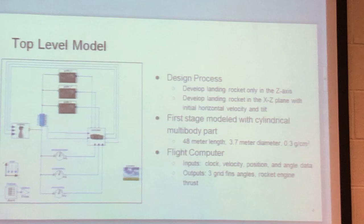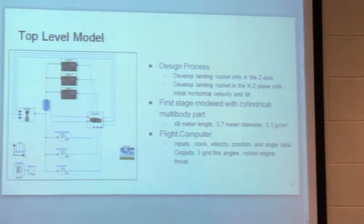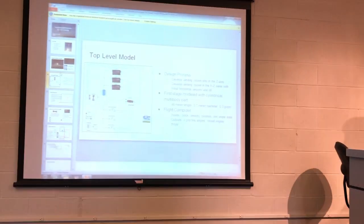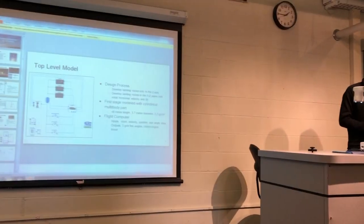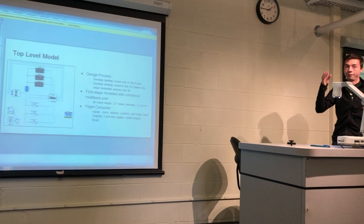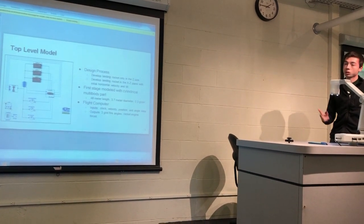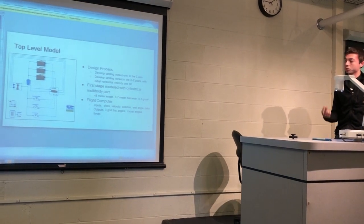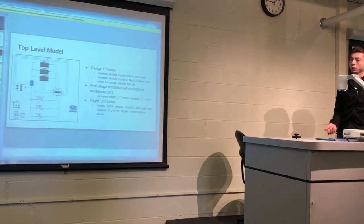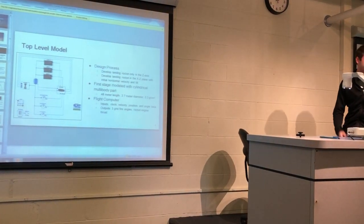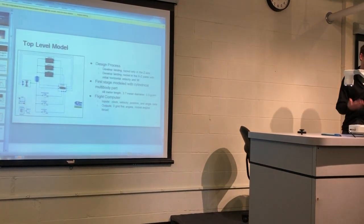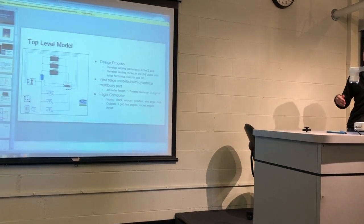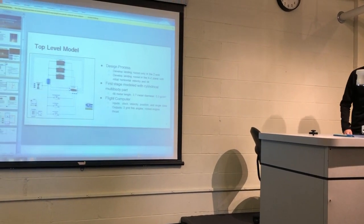This is basically my model from the top view. I have this multi-body part that's modeled as a cylinder, and it has the same length, diameter, and density as an actual Falcon 9 booster. I basically started off by having it only in the Z axis, so having it only basically falling down, and I only had to worry about burns in that axis. And then as I got that working I graduated to the XZ plane, adding tilt and horizontal velocity initial points.